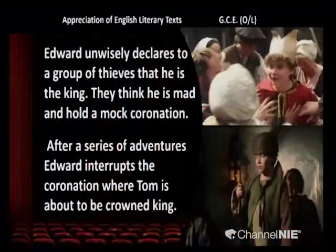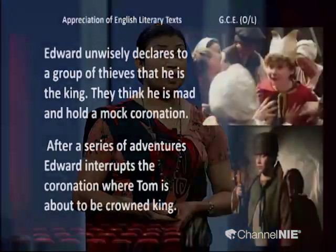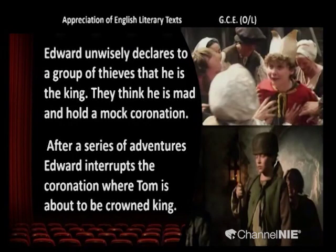Edward unwisely declares to a group of thieves that he is the king. They think he is mad and hold a mock coronation — again you find the motif of madness; Tom Canty's family also thinks Tom is mad. After a series of adventures, Edward interrupts the coronation where Tom is about to be crowned king. In the picture you can see the mock coronation.